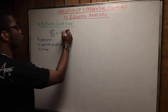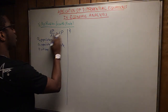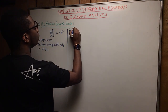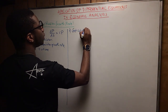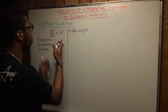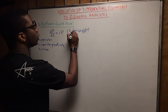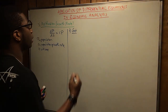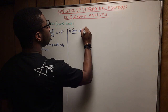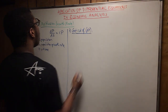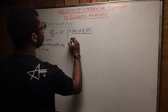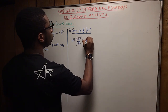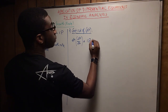The first thing we're going to do is get rid of dt. How? We simply multiply dt on both sides. So it gives us: dt times dp over dt equals rp times dt.